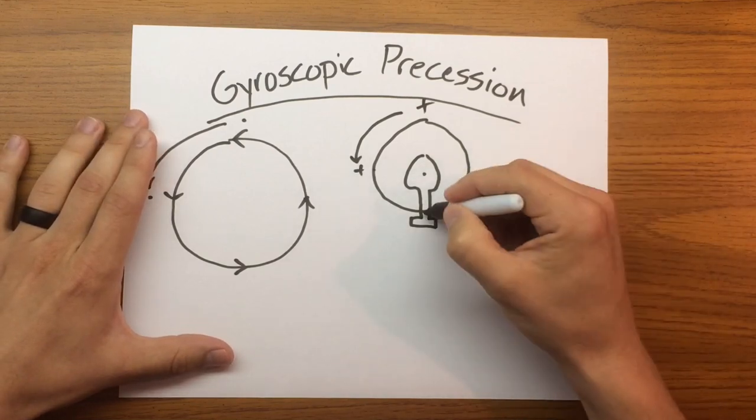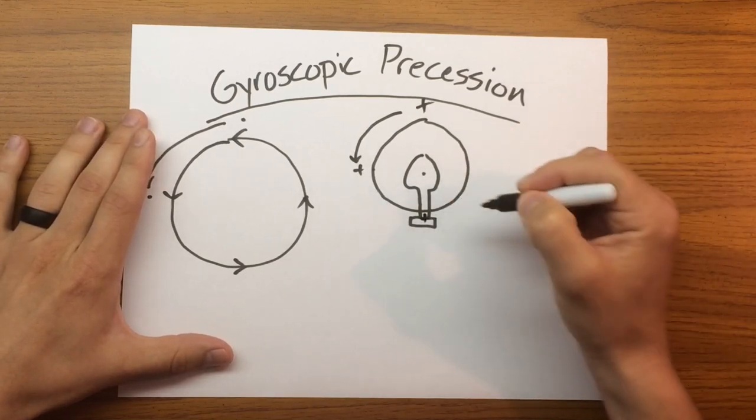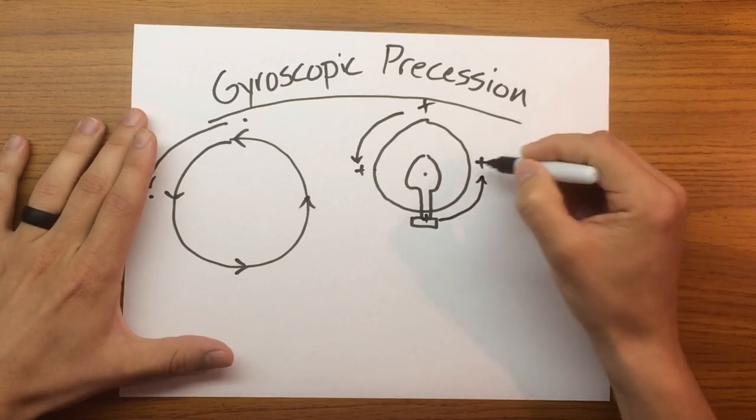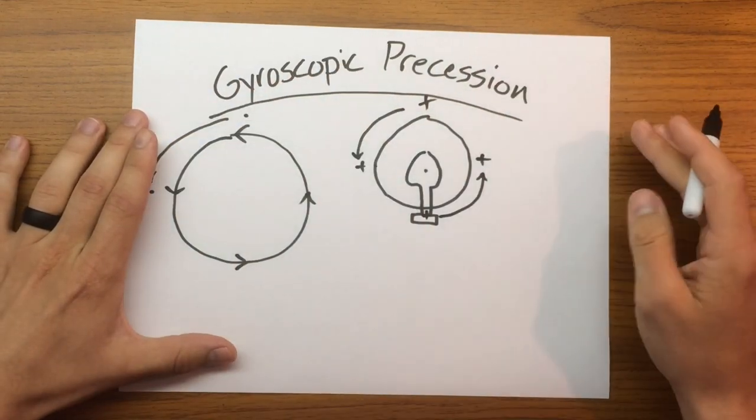Same thing holds true if we were to do something on the aft portion of the rotor. It would manifest 90 degrees later as an increase in pitch on the right side of the rotor, inducing a left turn.